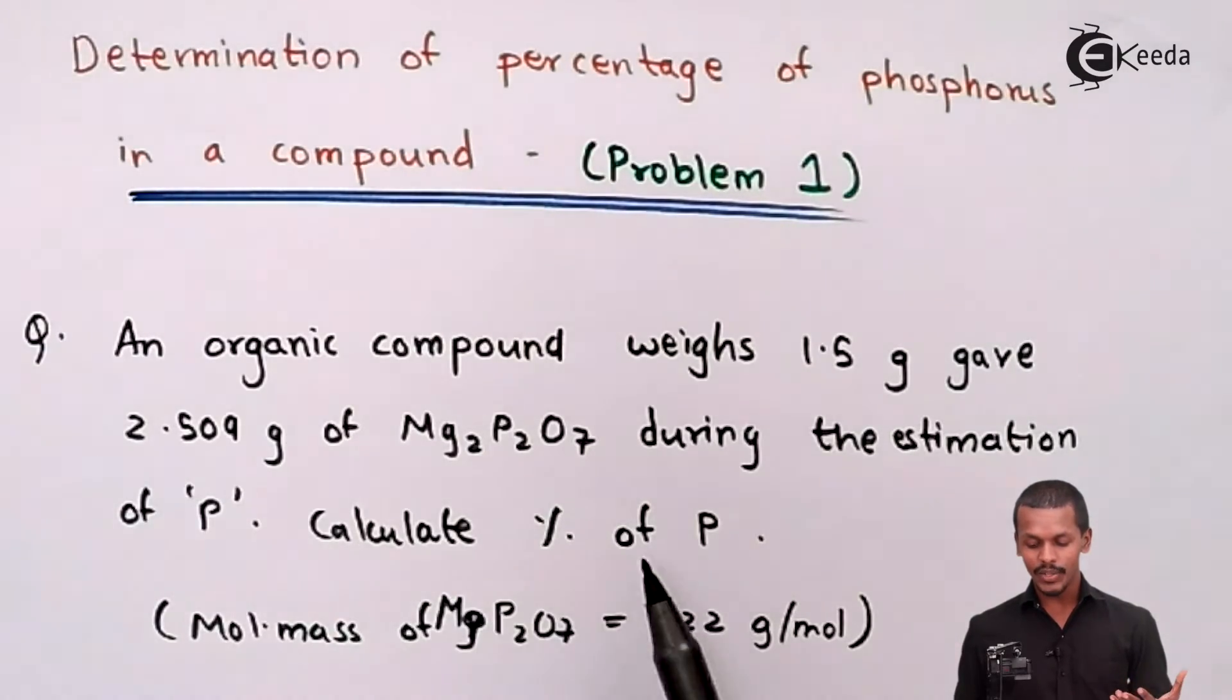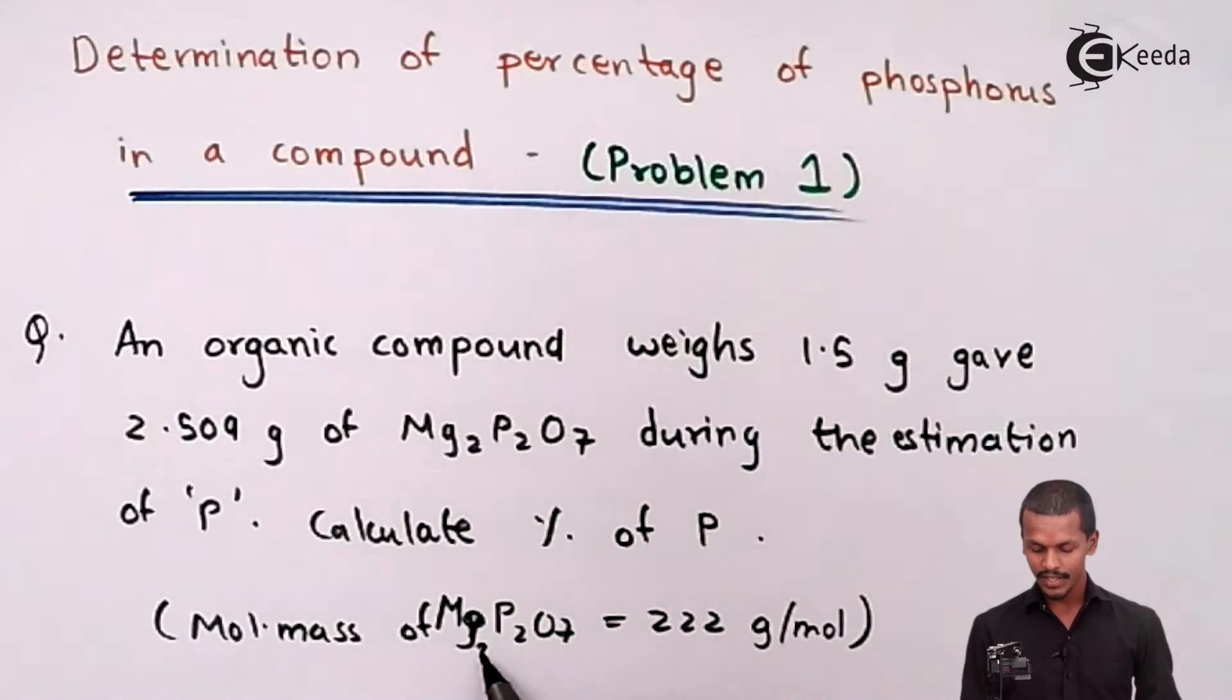Calculate the percentage of phosphorus if Mg2P2O7 has a molecular weight of 222 grams per mole.